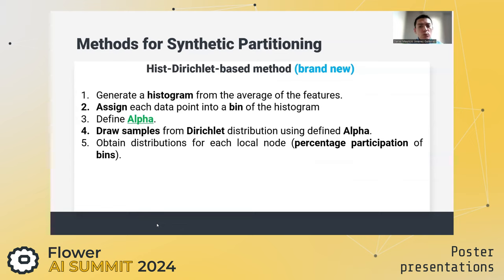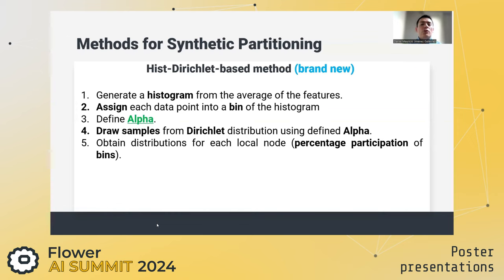To solve the issue of the previous technique, we implemented a brand new method called HIST-Dirichlet, which creates a histogram based on the average value of the features and assigns each example to a bin. From there, we apply the Dirichlet distribution with a defined alpha to obtain the distribution of each client.